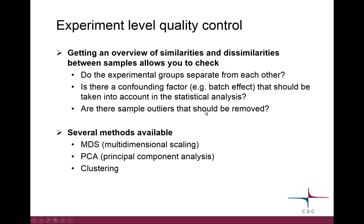There are several methods you can use for experiment-level quality control. They are mostly based on dimension reduction methods, so we are looking at MDS plots and PCA plots — multidimensional scaling plots and principal component analysis plots — and then some basic clustering.